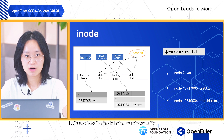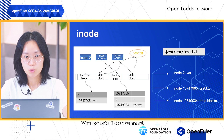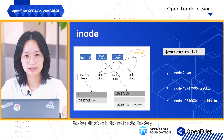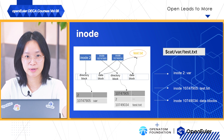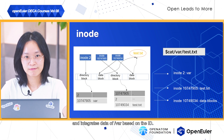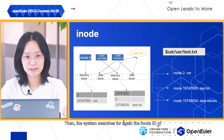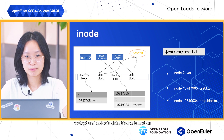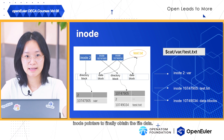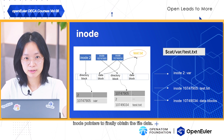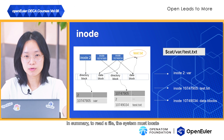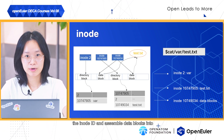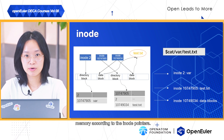Let's see how the inode helps us retrieve a file. When we enter the cat command, Linux searches for the inode ID of the var directory in the root directory and retrieves data of var based on that ID. Then the system searches for the inode ID of the target file and collects data blocks based on the inode pointers to finally obtain the file data. In summary, to read a file, the system must locate the inode ID and assemble data blocks into memory according to the inode pointers.